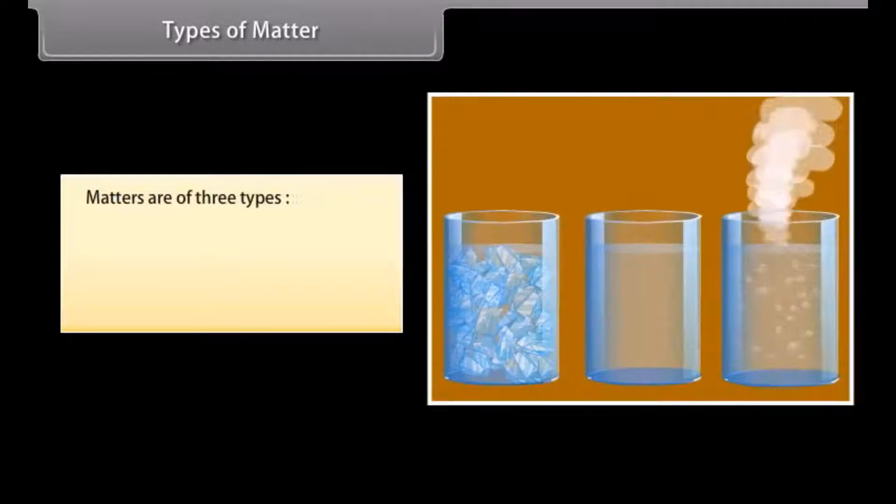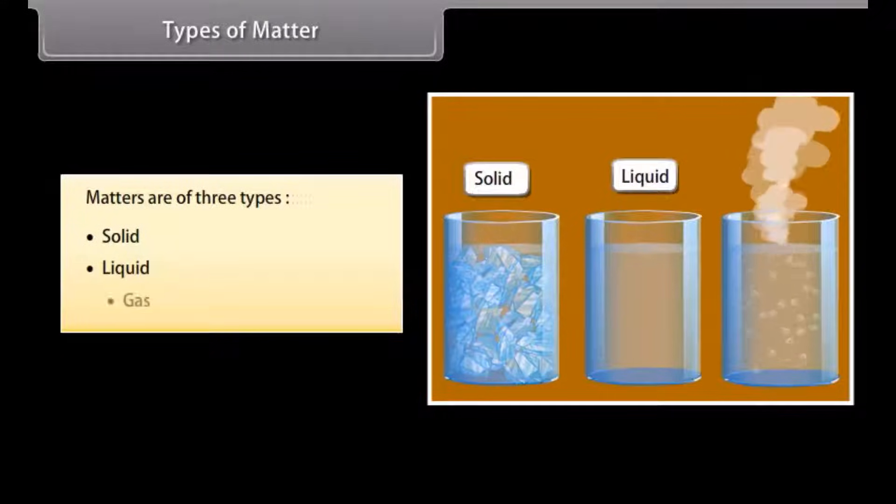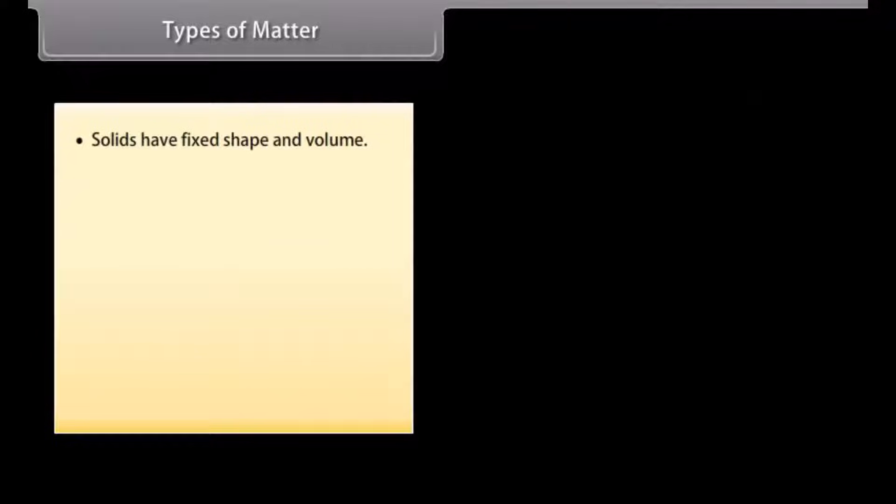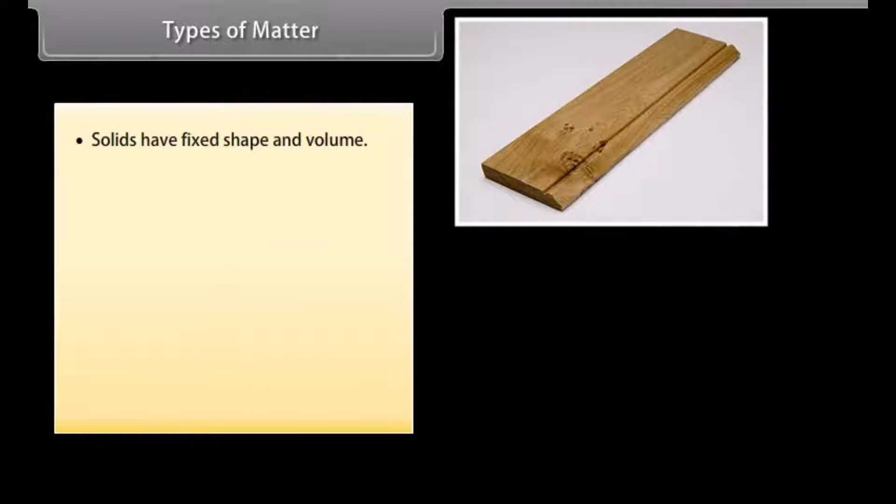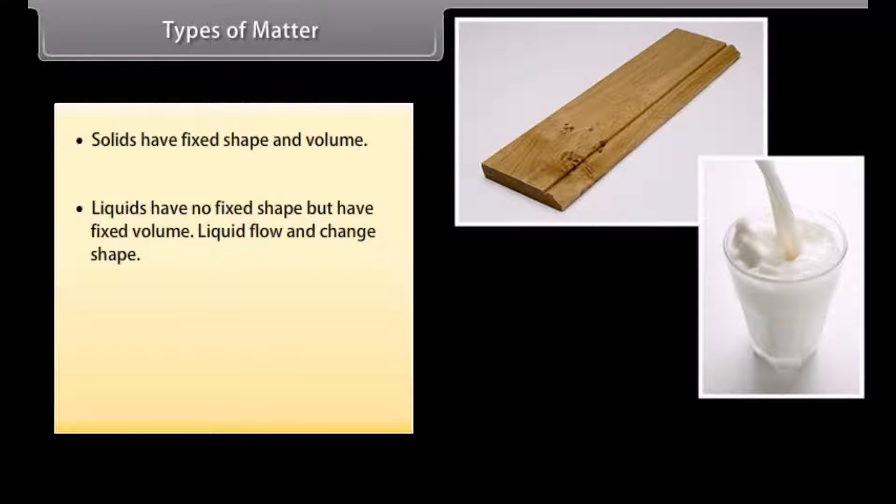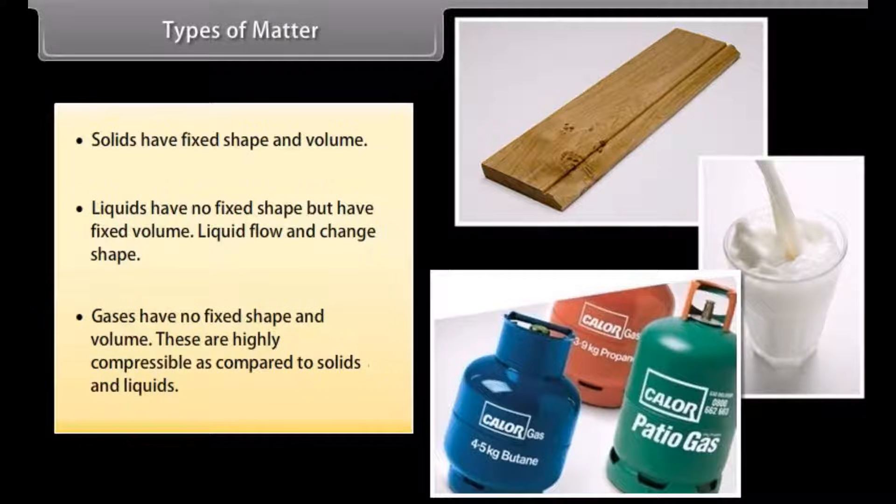Types of matter: Matters are of three types - solid, liquid, gas. Solids have fixed shape and volume. Liquids have no fixed shape but have fixed volume. Liquid flow and change shape. Gases have no fixed shape and volume. These are highly compressible as compared to solids and liquids.